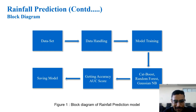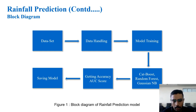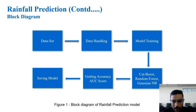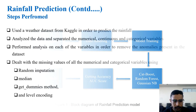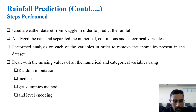For the rainfall prediction model block diagram, we gathered a dataset, handled and trained the model, and used three different algorithms: CatBoost, Random Forest, and Gaussian Naive Bayes. We obtained both the accuracy score and the AUC score for all three algorithms and saved the model.